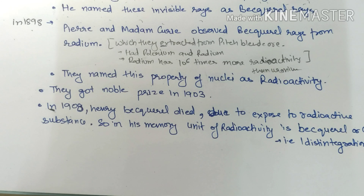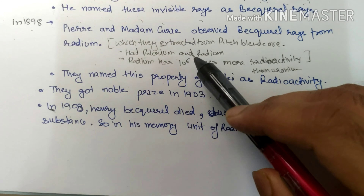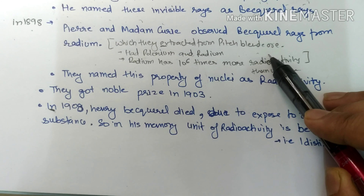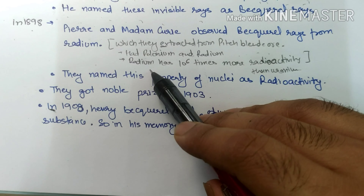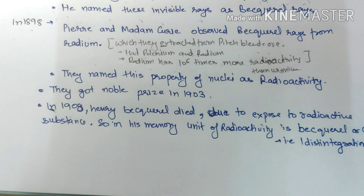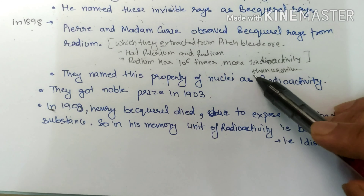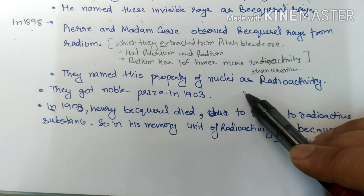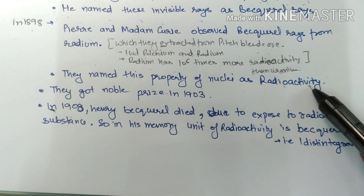Further, in 1898, Pierre and Madame Curie observed Becquerel rays from radium, which they extracted from pitchblende ore. Radium has 10 to the power of 6 times more radioactivity than uranium. They named this property of the nucleus as radioactivity.